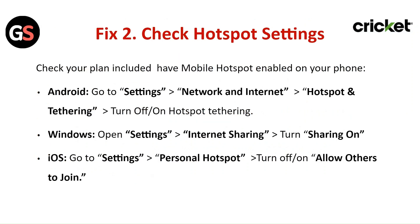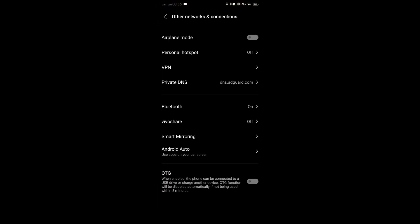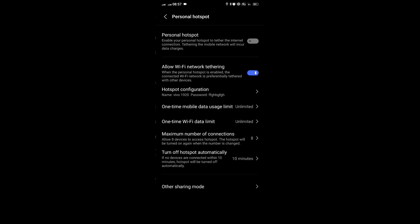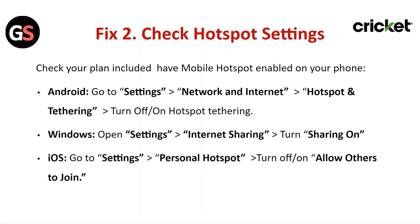Fix two: Check hotspot settings. Check that you have mobile hotspot enabled on your phone. For Android, go to Settings, then Network and Internet, then Hotspot and Tethering — turn the hotspot off and on. For Windows, open Settings, then Internet Sharing, and turn sharing on. For iOS, go to Settings, then Personal Hotspot — turn off and on 'Allow Others to Join.'